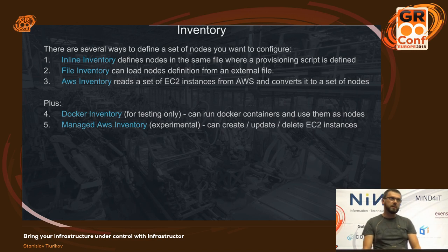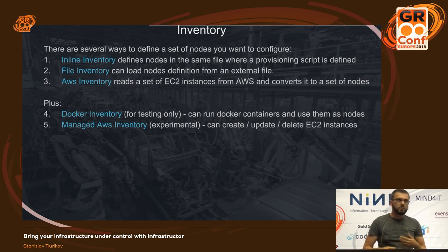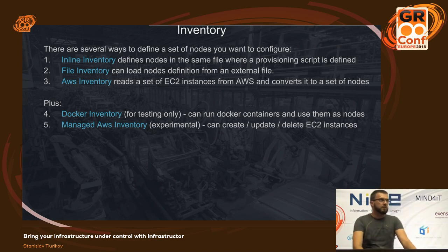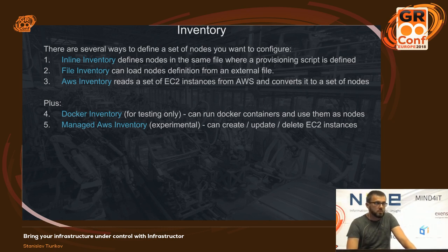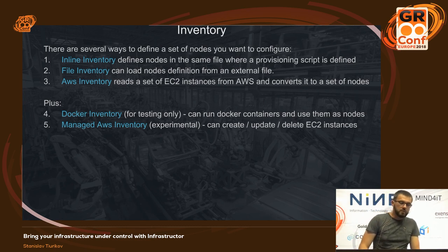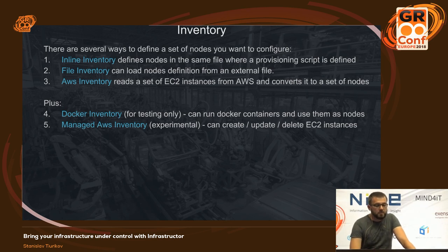Let's talk about inventories. There are many ways to define your inventory. The first and simplest is inline inventory — you define your nodes in the same file as the provisioning script. Second is file inventory — you create a separate file with node declarations and reuse it across multiple provisioning scripts. There is also cloud integration with AWS inventory, which reads information from EC2 and converts it to a set of nodes. There is also Docker inventory for testing, and managed AWS inventory — an experimental feature that can create, update, and delete EC2 instances.